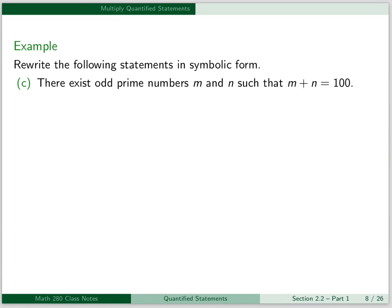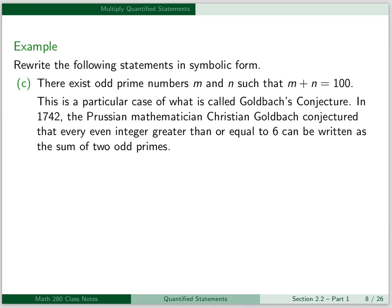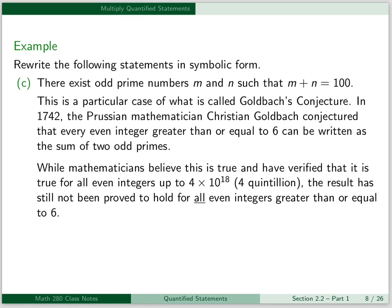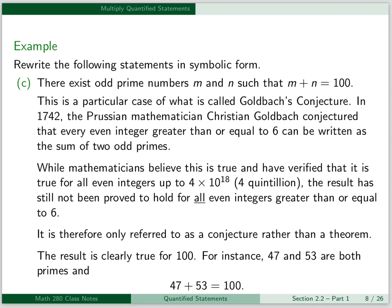For our third example, we have the statement: there exist odd prime numbers m and n such that m plus n is equal to 100. This is a particular case of what is called Goldbach's conjecture. In 1742, the Prussian mathematician Christian Goldbach conjectured that every even integer greater than or equal to 6 can be written as the sum of two odd primes. While mathematicians believe this is true and have verified it for all even integers up to 4 times 10 to the 18th — which is 4 quintillion — the result has still not been proved to hold for all even integers greater than or equal to 6. It is therefore only referred to as a conjecture, rather than a theorem. The result is clearly true for 100; for instance, 47 and 53 are both primes, and 47 plus 53 equals 100.